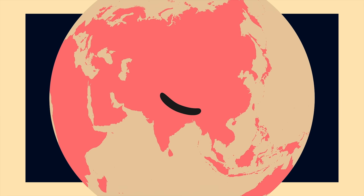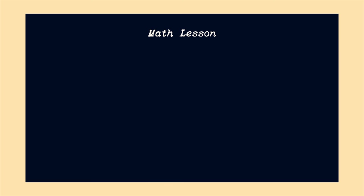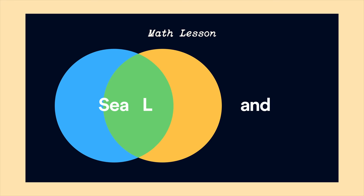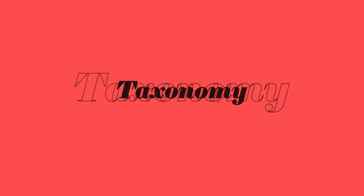Seals can be found everywhere on the planet Earth — actually, not here, or here, or here. They've adapted to live just at the intersection of the sea and the land. There are 34 species of seals — technically seals. But we just want to learn how to distinguish between the general groups. The science of grouping animals is called taxonomy, but please don't report me to any scientists.